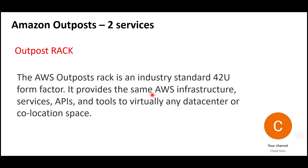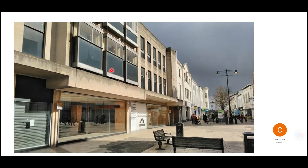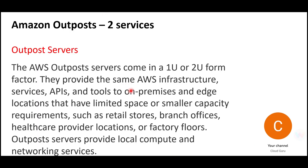Using Outpost Rack, you can use the AWS infrastructure. Basically, what it does is it gives you a big rack, and AWS people will come to your building or courier it, set it up on your premises. Similarly, there are Outpost Servers.